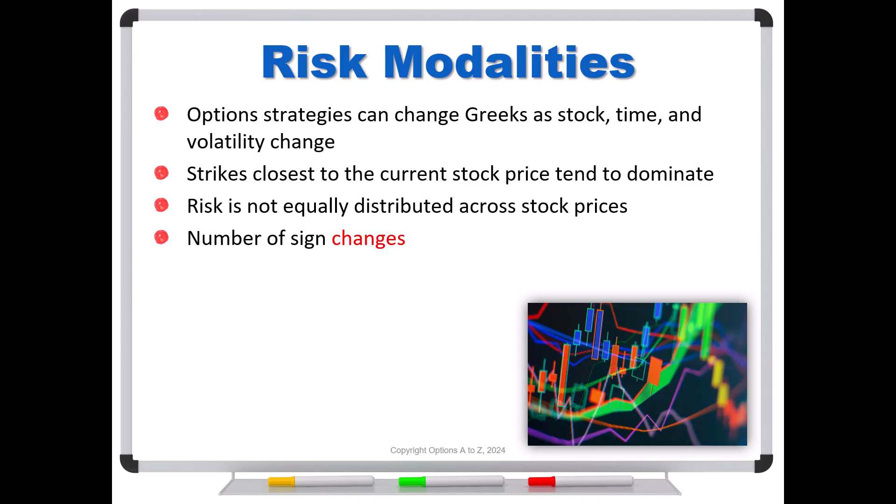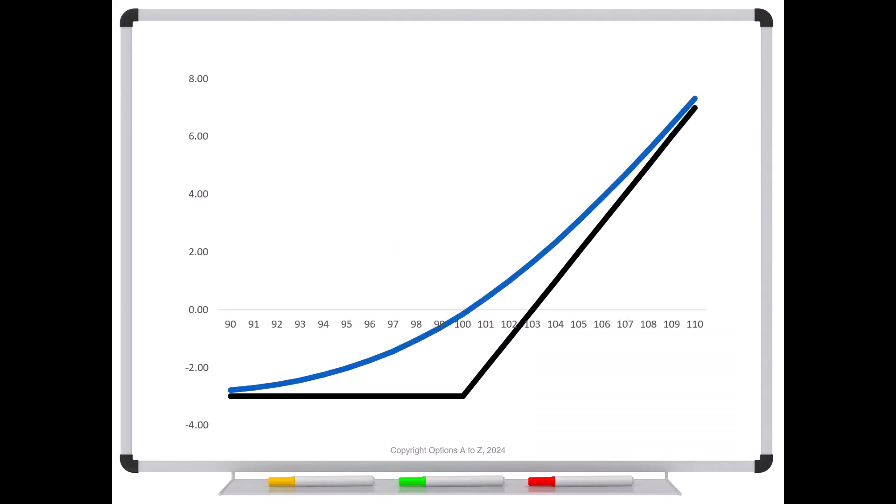So let's start off with a simple one, just a long call. So here's a risk graph that we're all familiar with now, kind of our hockey stick shape. That's the expiration graph. We get a bend right there at 100, so we can tell this is the 100 strike call. But prior to expiration, this profit and loss diagram doesn't look like this. This is only at expiration, this black line. Prior to expiration, let's say with 30 days to go, we're on this blue line.